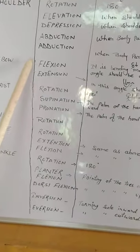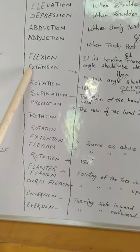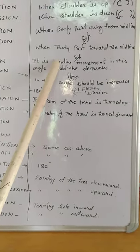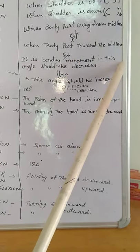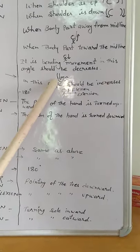In elbow joint, two movements are there: flexion and extension. Flexion means it is bending movement. In this, angle should be decreased. See diagram here.